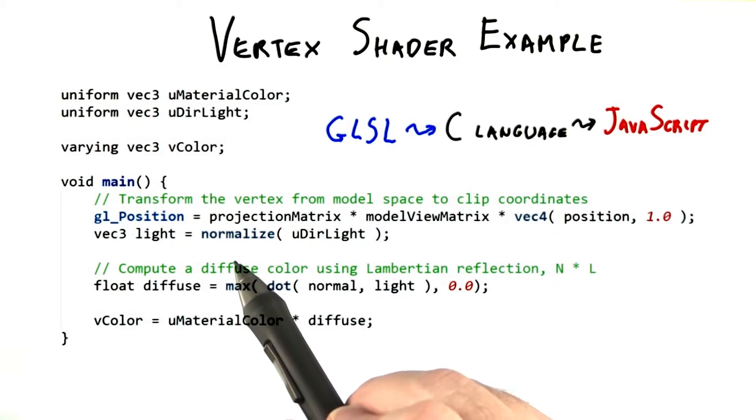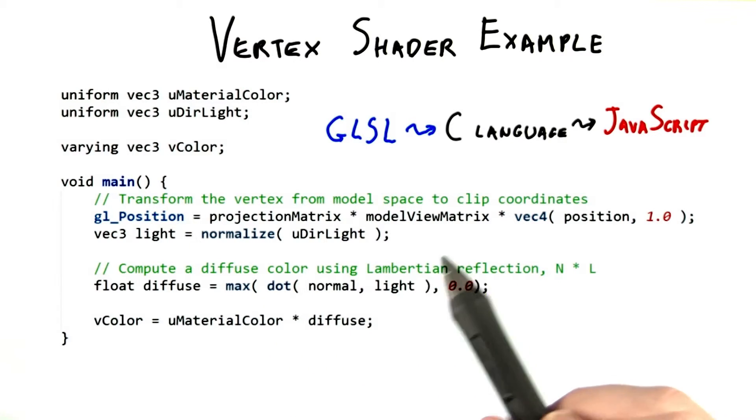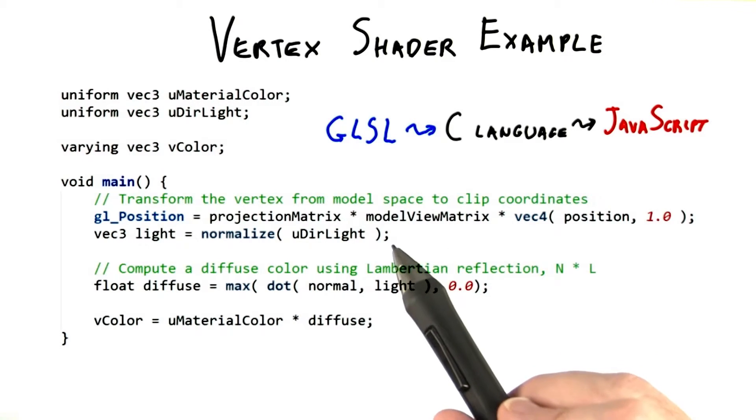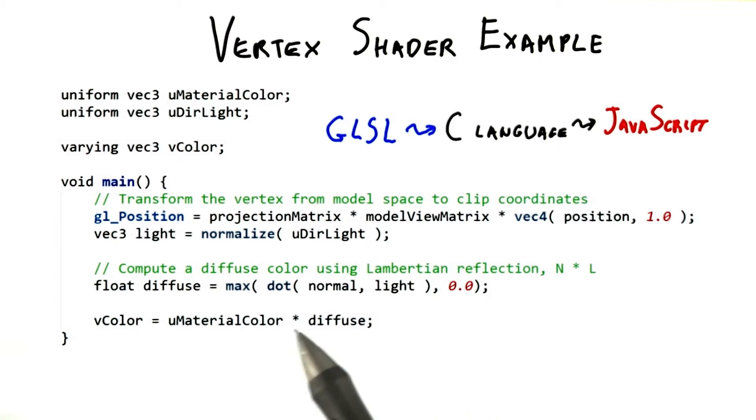This next line normalizes the direction to the light. This operation is done here more for convenience of the designer, so that the light direction does not have to be passed in normalized. You could get rid of this line if you required that the light direction must be normalized before being passed into this shader.